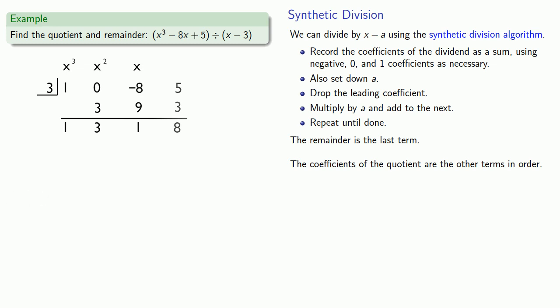And we can write our result. The last term is the remainder. And the other terms are the coefficients of our quotient, constant, X term, X squared term. Alternatively, we can write the remainder as a fraction over X minus 3. But that's it.